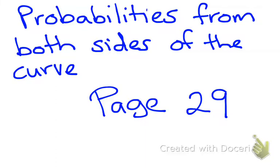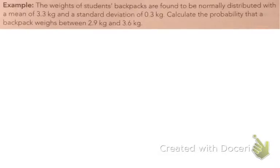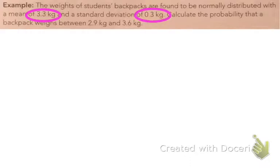We're on page 29 and we're looking at a normal probability, looking at probabilities from both sides of the curve. In our example, we've got backpacks that are normally distributed with a mean of 3.3 kilos and a standard deviation of 0.3. We want to find the probability that a backpack weighs between 2.9 and 3.6 kg.